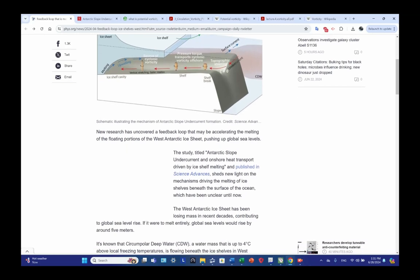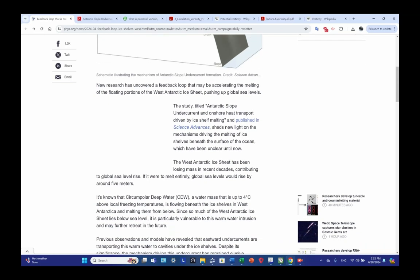New research has uncovered a feedback loop that may be accelerating the melting of the floating portions of the West Antarctic ice sheet, which will then result in an increase in global sea levels.